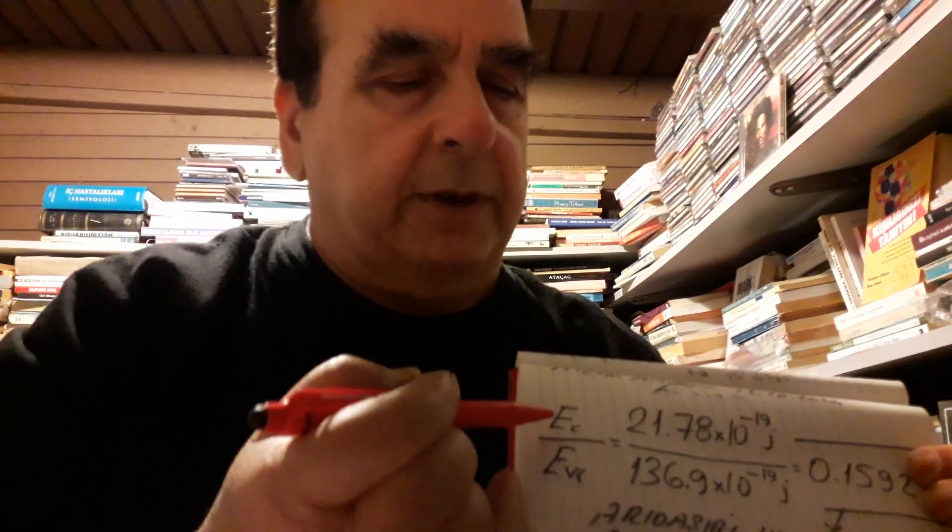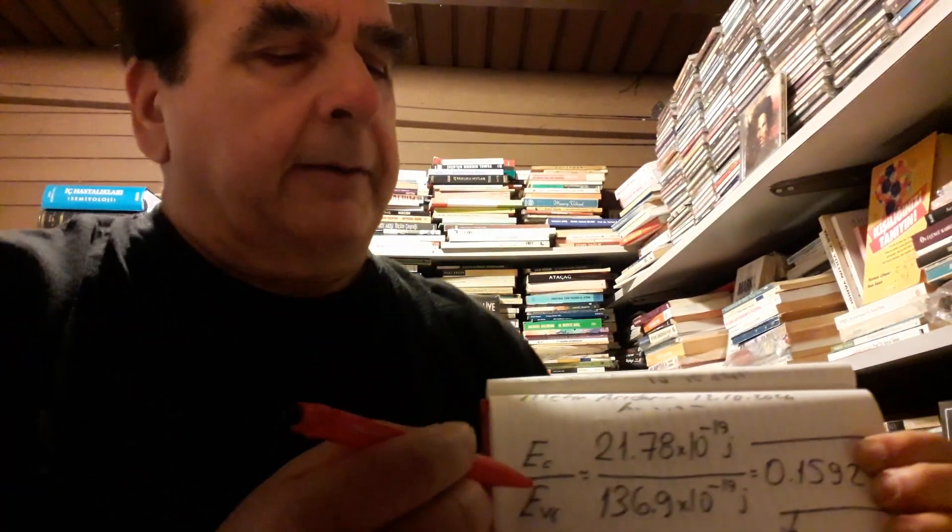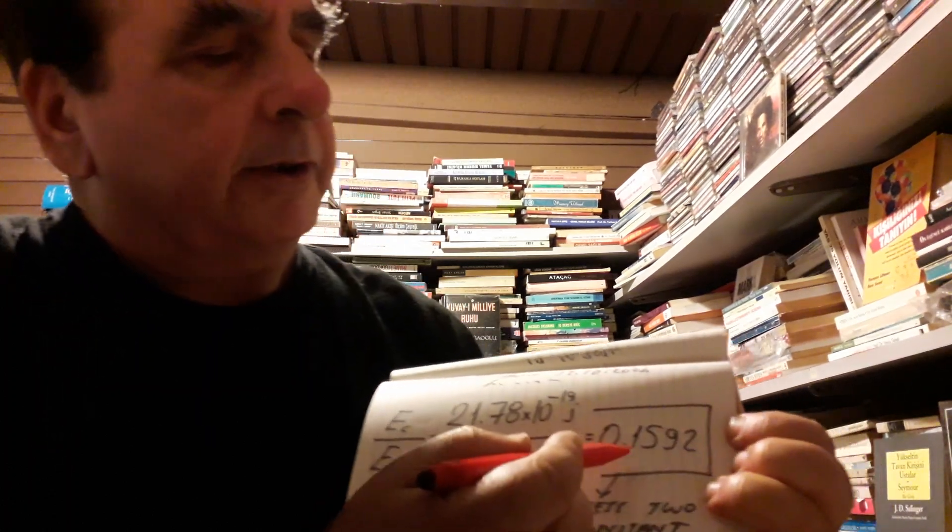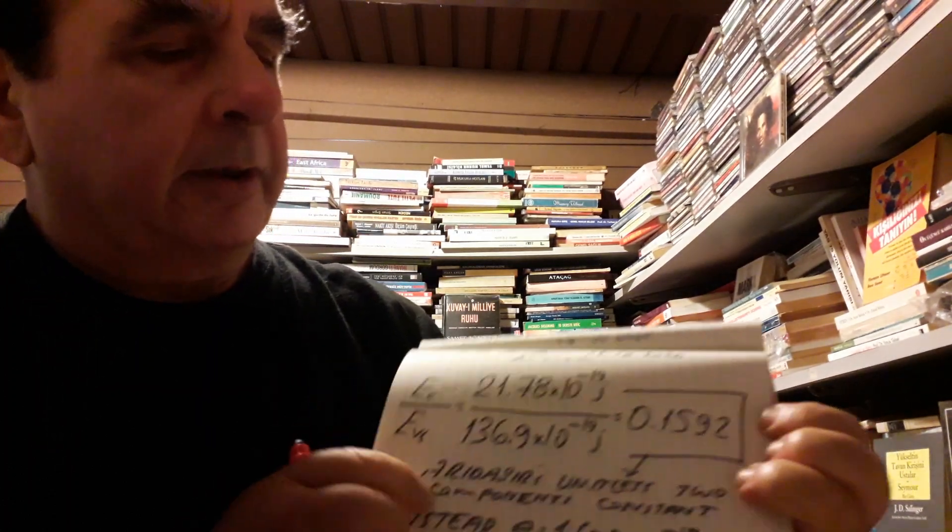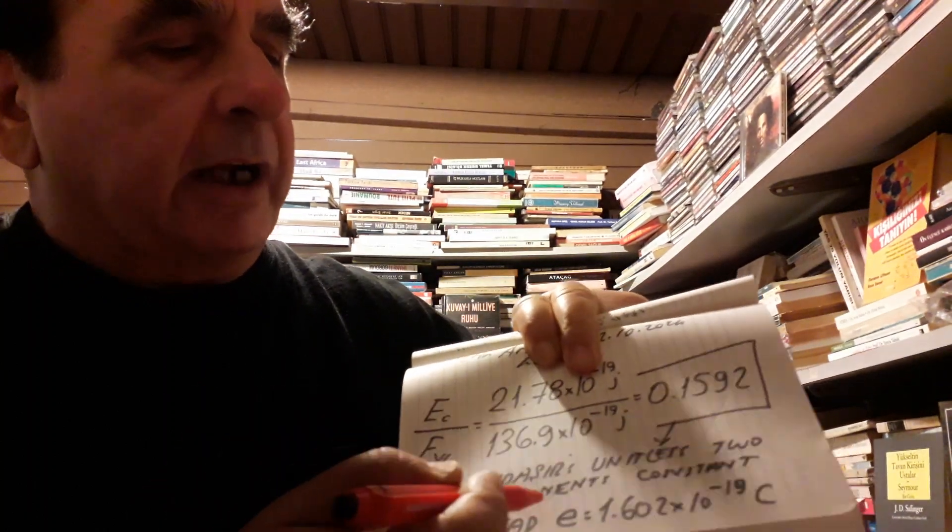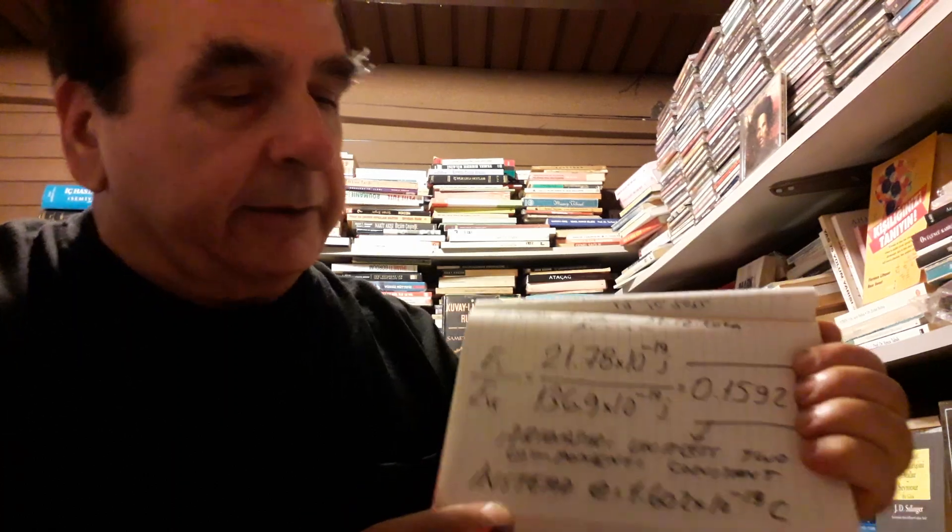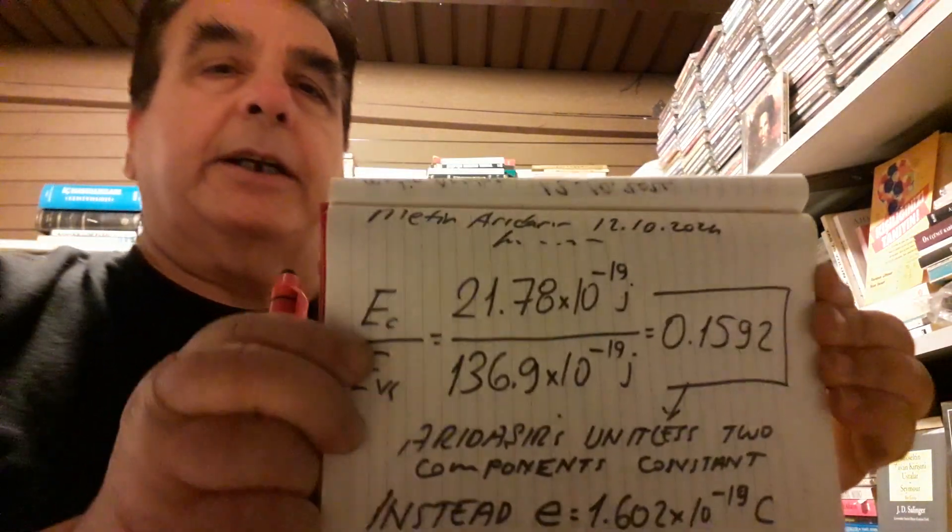Now, if we divide speed of light component energy by tangential velocity component energy, then we gain 0.1592. This is my unitless two components constant instead of elementary charge.